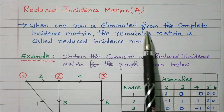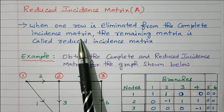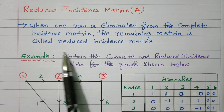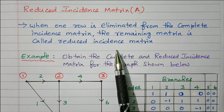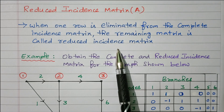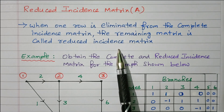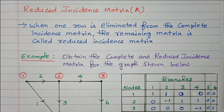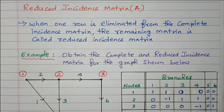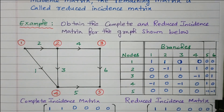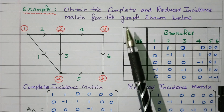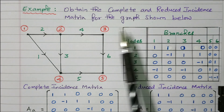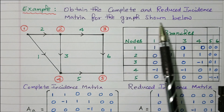When one row is eliminated from the complete incident matrix, the remaining matrix is called a reduced incident matrix. If you eliminate one row from a complete incident matrix, that is called a reduced incident matrix. Now we will see an example problem so that we can understand easily. We will obtain the complete and reduced incident matrix for the graph shown below.